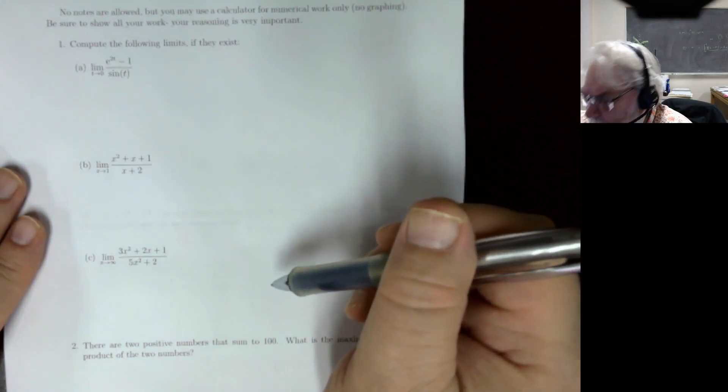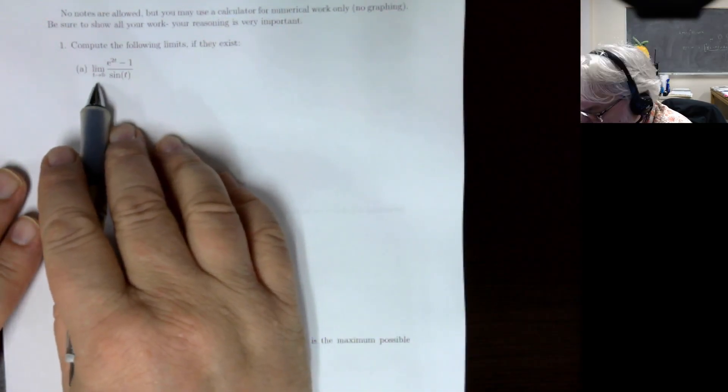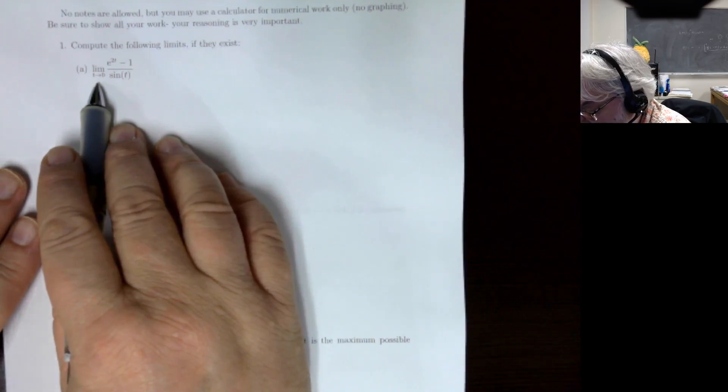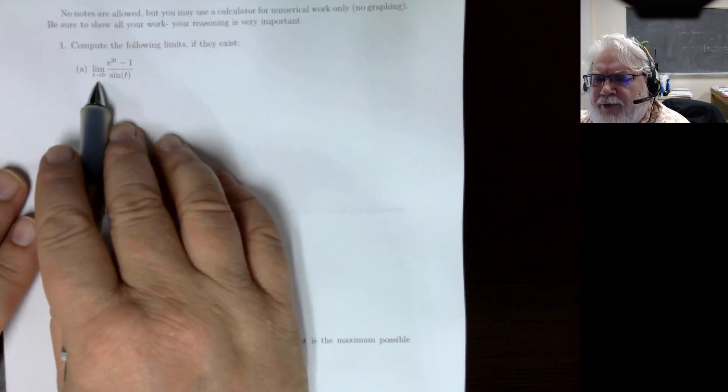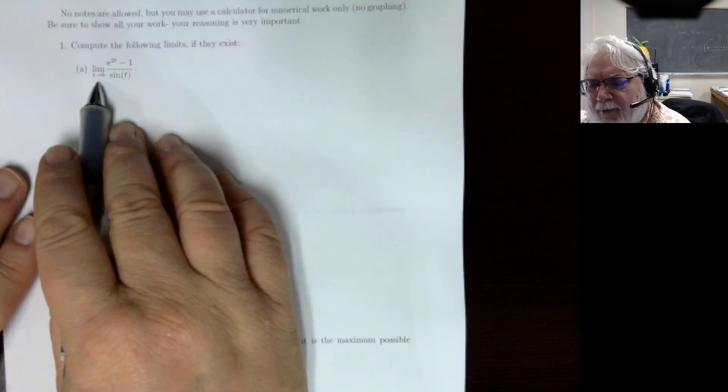The first ones are really set up for L'Hôpital's rule, so you definitely want to check first to see if L'Hôpital's rule works. I need either a zero over zero or a plus or minus infinity divided by plus or minus infinity. The first one, as t goes to zero, this is going to be 1 minus 1 which is 0, and the sine of 0 is 0, so this is 0 over 0 — that does work.